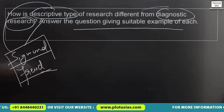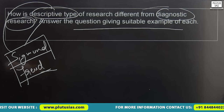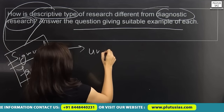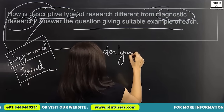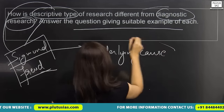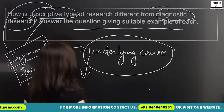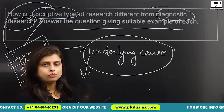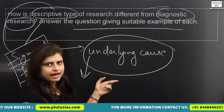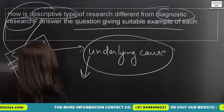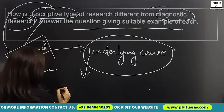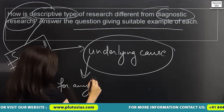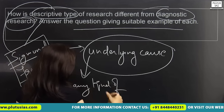Sigmund Freud has also talked about understanding the difference and analyzing the underlying cause — that is, any kind of activity or event that has occurred in a person's life. Sigmund Freud has given emphasis on diagnosing that event and the underlying cause of why that event occurred. So Freud is actually talking about underlying causes for any kind of activity.